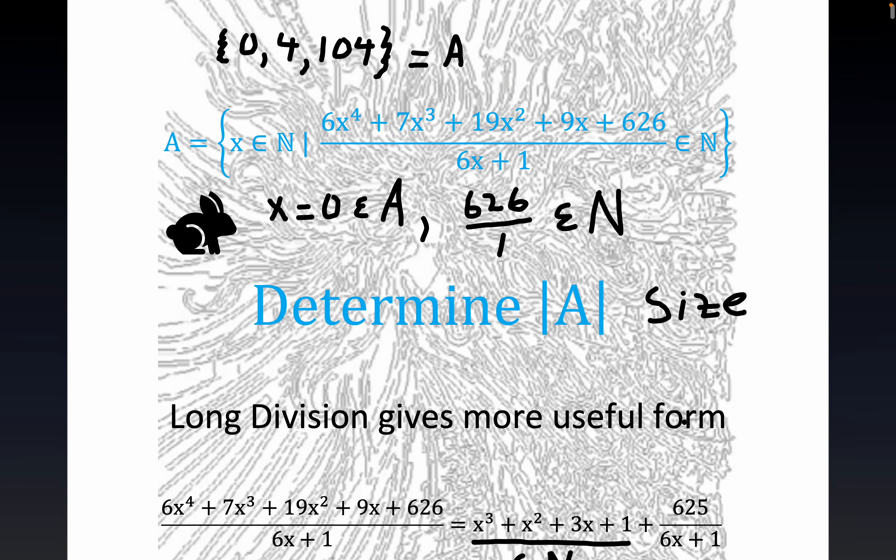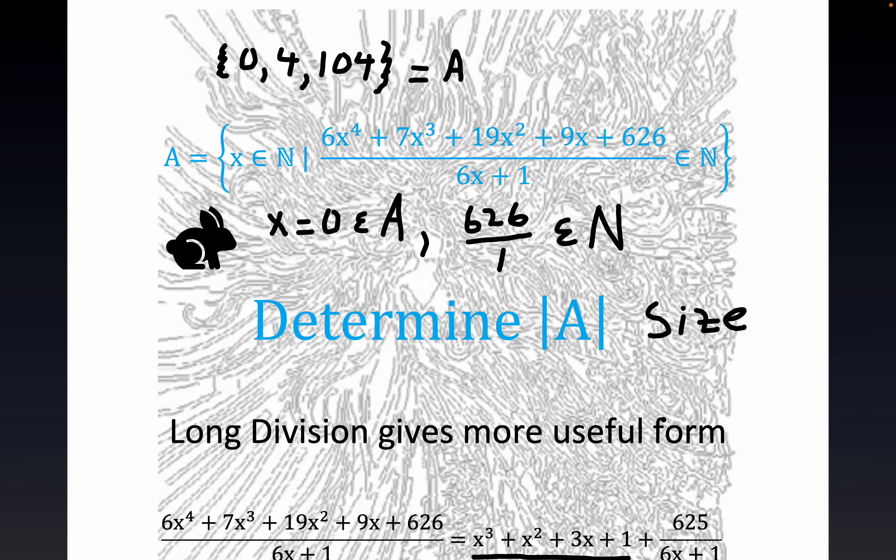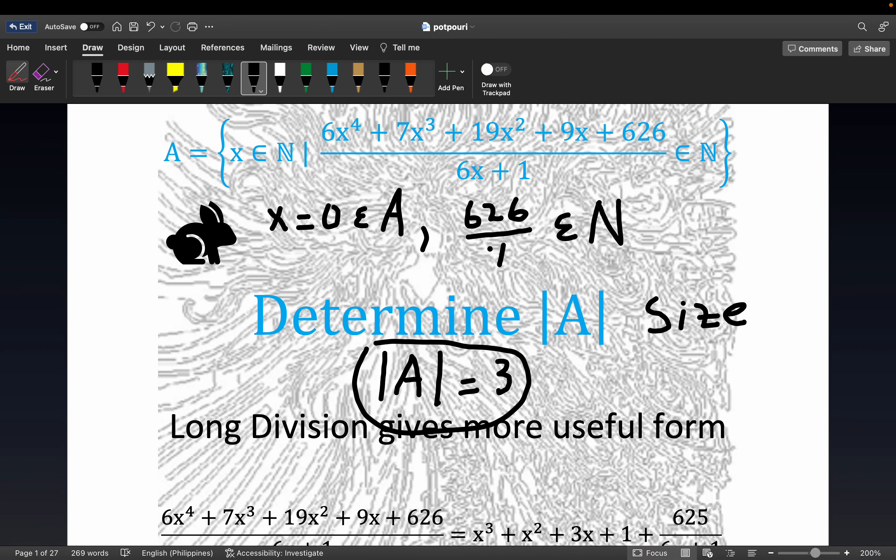And so the answer to the question, the absolute value or the cardinality of this set A, we know to be three. And that completes this demonstration, folks. Here we go. Hope you enjoyed.